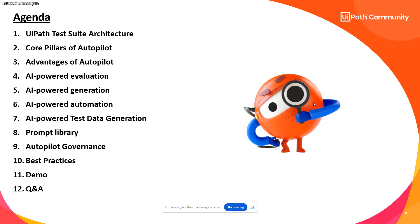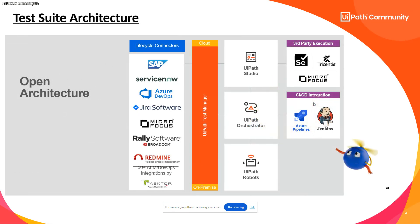We'll also look at test data generation and touch on prompt libraries, since prompts are the basic pillars for any Gen AI capability. We'll cover governance of Autopilot — because when dealing with Gen AI in the cloud, security plays a major role — and what different governance options UiPath offers. We'll also cover best practices when implementing Autopilot, and finish with a live demo.